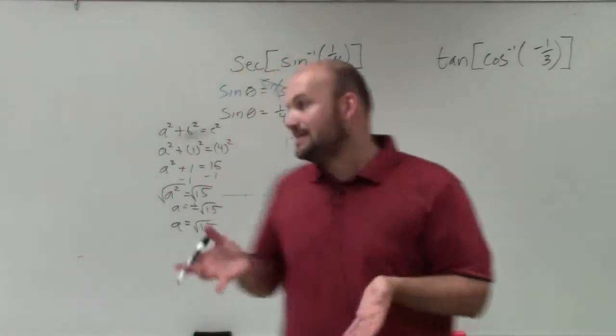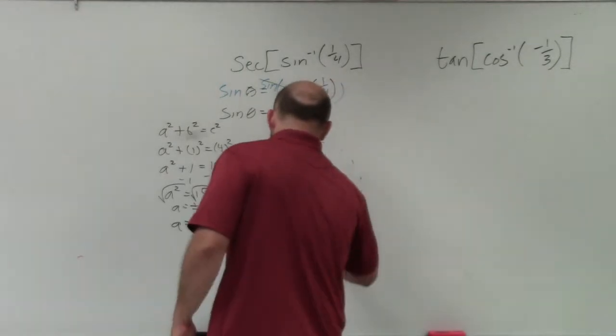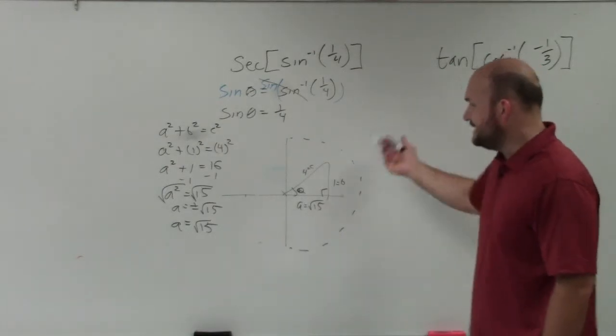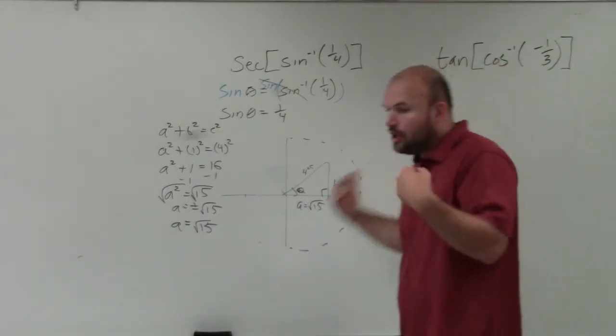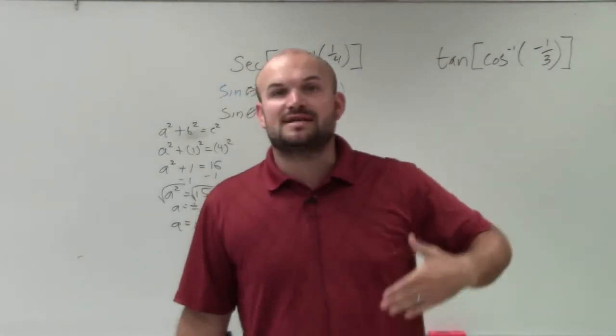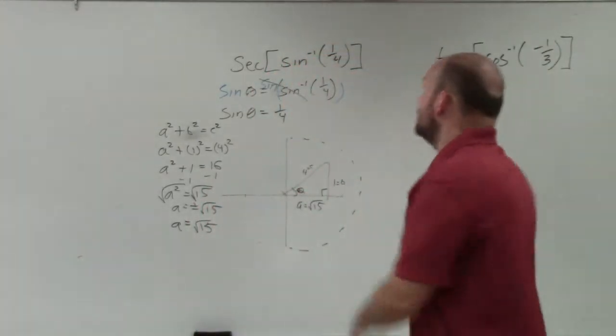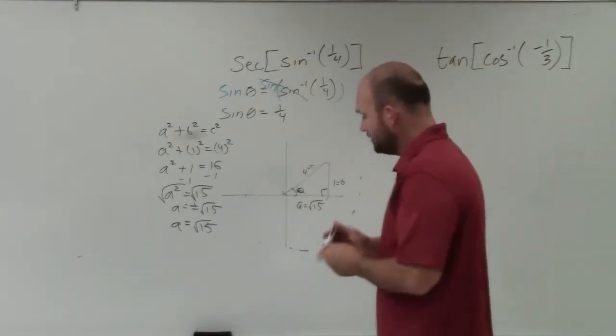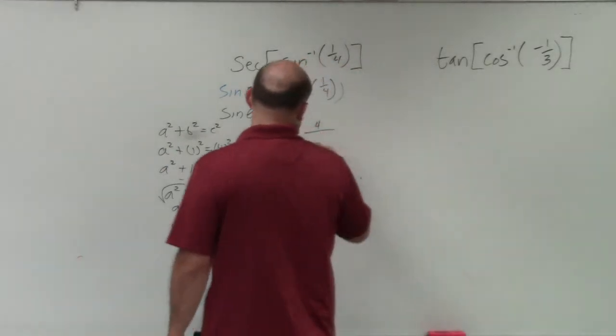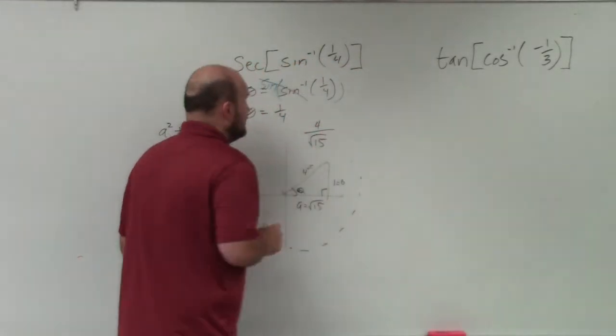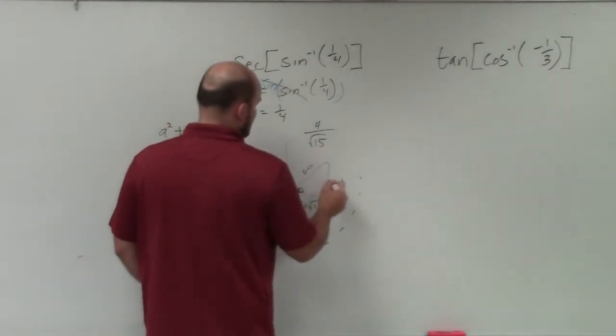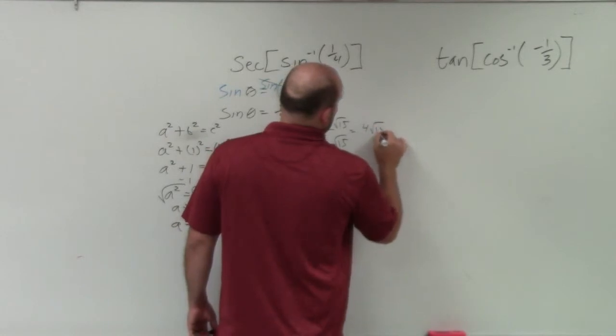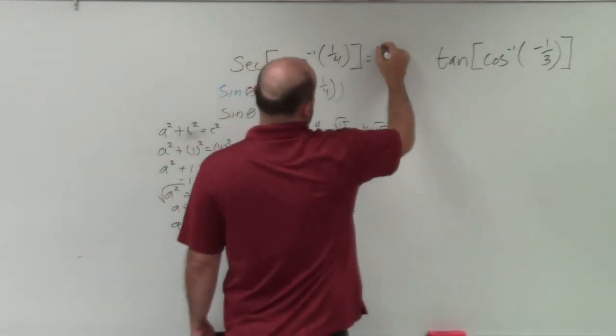Now, we're still not done, though, because remember, we're trying to figure out, so a equals the positive square root of 15. So now we need to take the secant of this. So remember, secant is the inverse of cosine. Cosine is adjacent over hypotenuse. So the secant is going to be 4 over the square root of 15. So now, all I simply do is I need to rationalize the denominator, and I get 4 square root of 15 over 15. And that's my final answer.